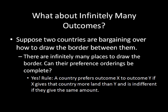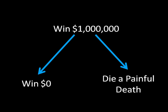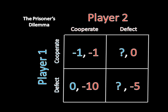You might be wondering why it's a problem if we have an incomplete preference relation. Here's an example: winning a million dollars is better than both winning zero dollars and dying a painful death, but we don't have anything between the latter two — it's like saying 'I don't know whether I prefer this or this.' Let's look at this in the prisoner's dilemma. I've replaced player one's payoffs when player two defects with question marks — player one says he doesn't know what happens if player two defects, and doesn't know if he prefers cooperating or defecting in that case.